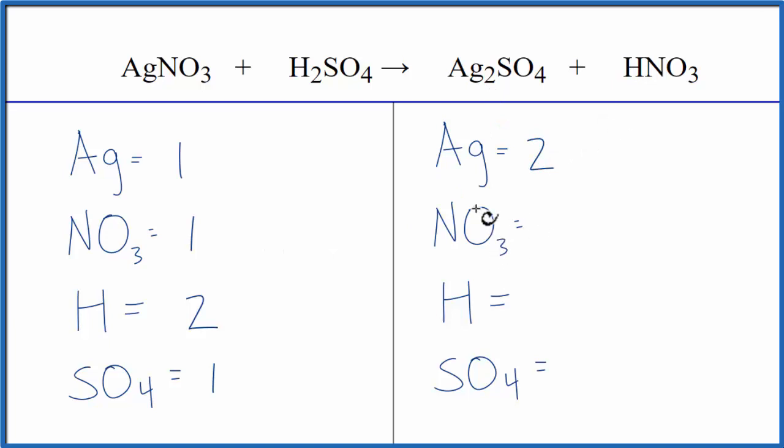Two silvers, NO3, we have our one nitrate group, we have our one hydrogen, and then we have one SO4, one sulfate group. Looks like the silvers and the hydrogens aren't balanced.